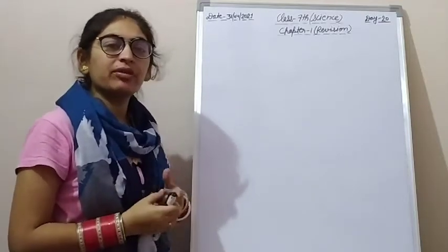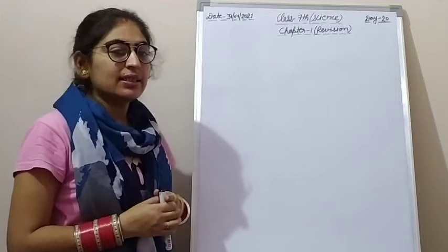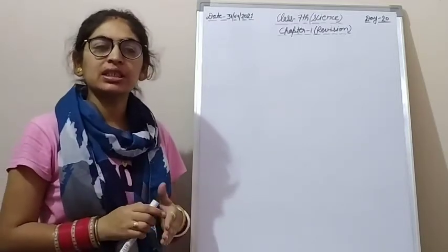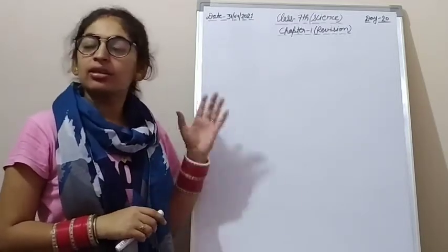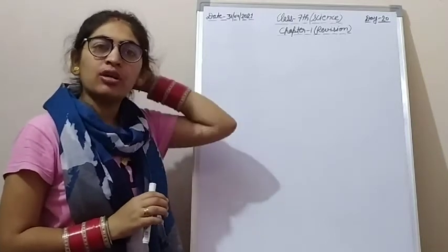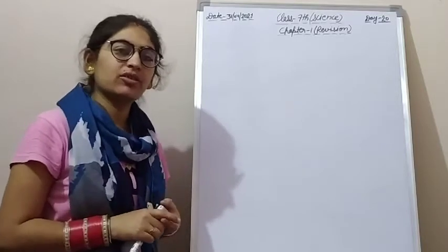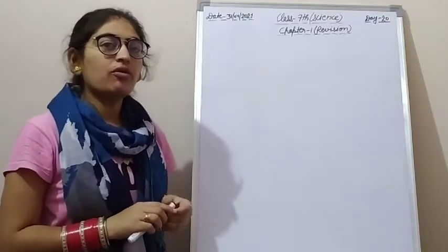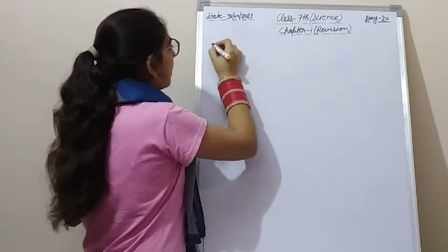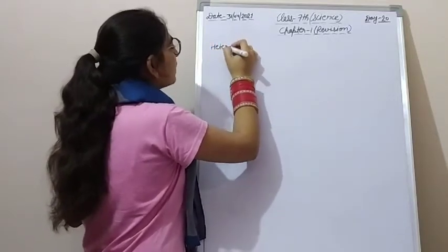We have already revised some parts of Chapter 1 — the autotrophic mode of nutrition, the process of photosynthesis, and things required for it. So today we are going to revise the heterotrophic mode of nutrition.